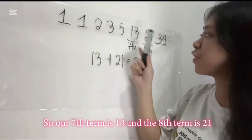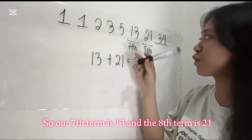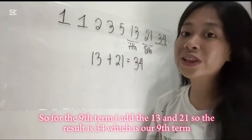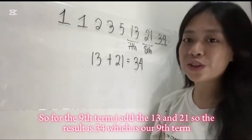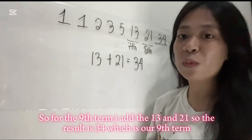So, our seventh term is 13 and the eighth term is 21. For the ninth term, I add 13 and 21. The result is 34, which is our ninth term.